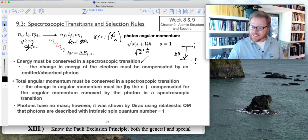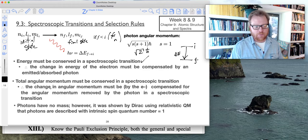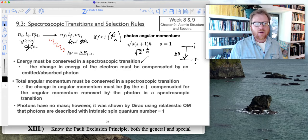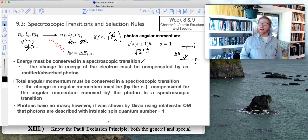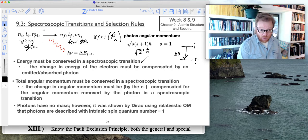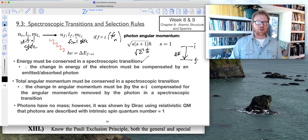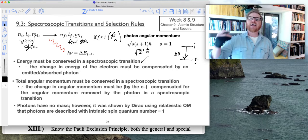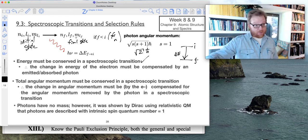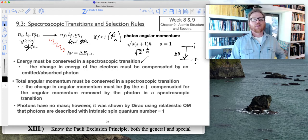What this means is total angular momentum must be conserved in a spectroscopic transition. Therefore the change in angular momentum must be compensated for the angular momentum removed by a photon. For example, if an atom undergoes this type of transition where it goes from a high energy state to a low energy state and emits light as a result, that light is going to be removing energy from the molecule, and that energy comes from the transition from an excited state to a ground state.